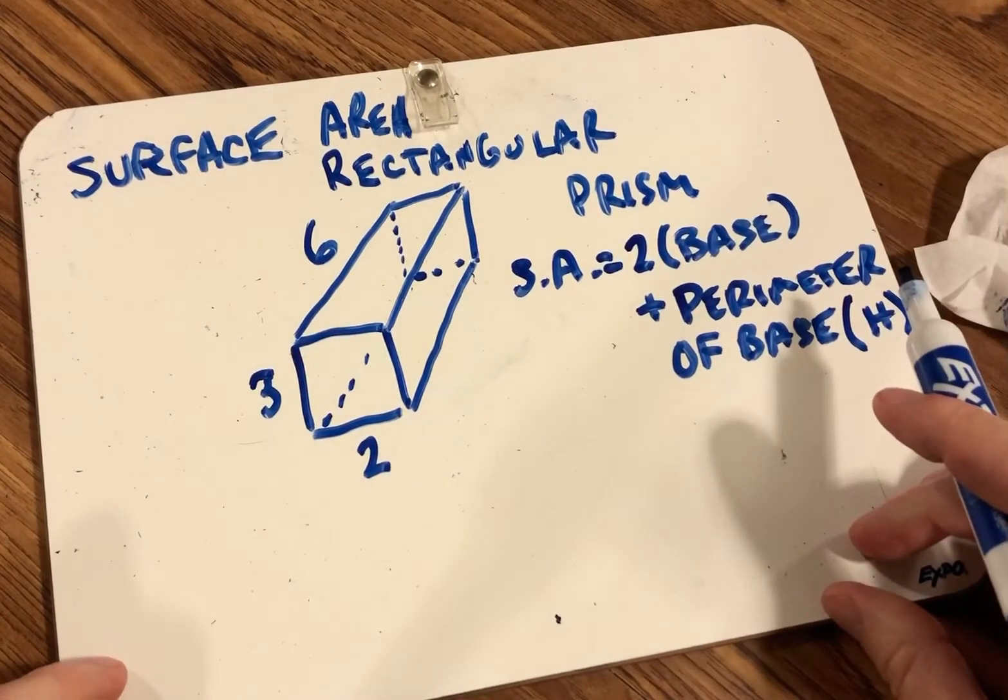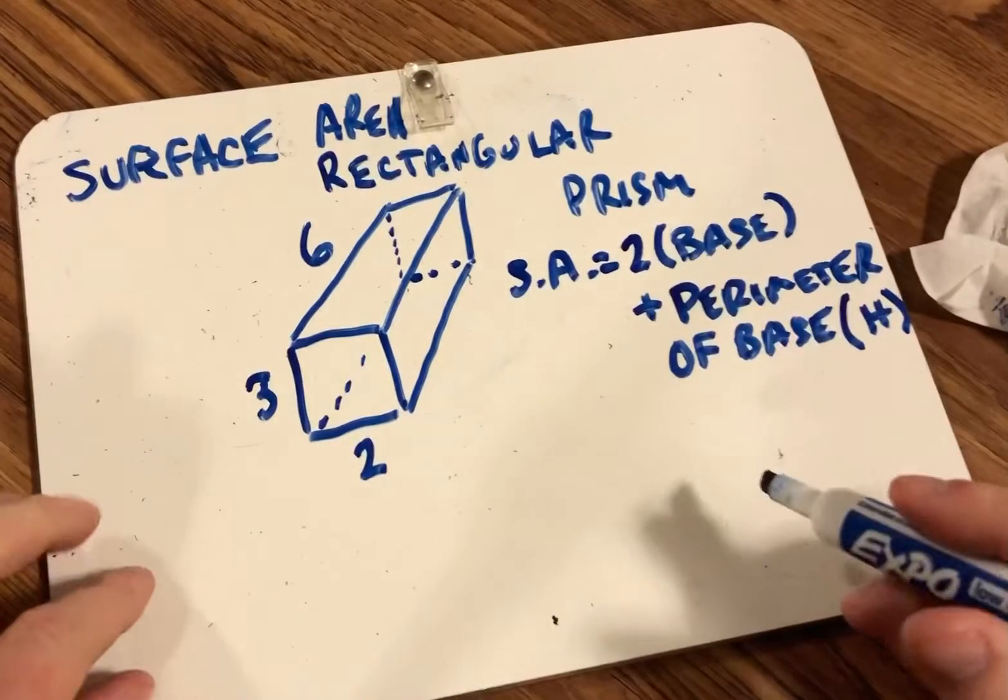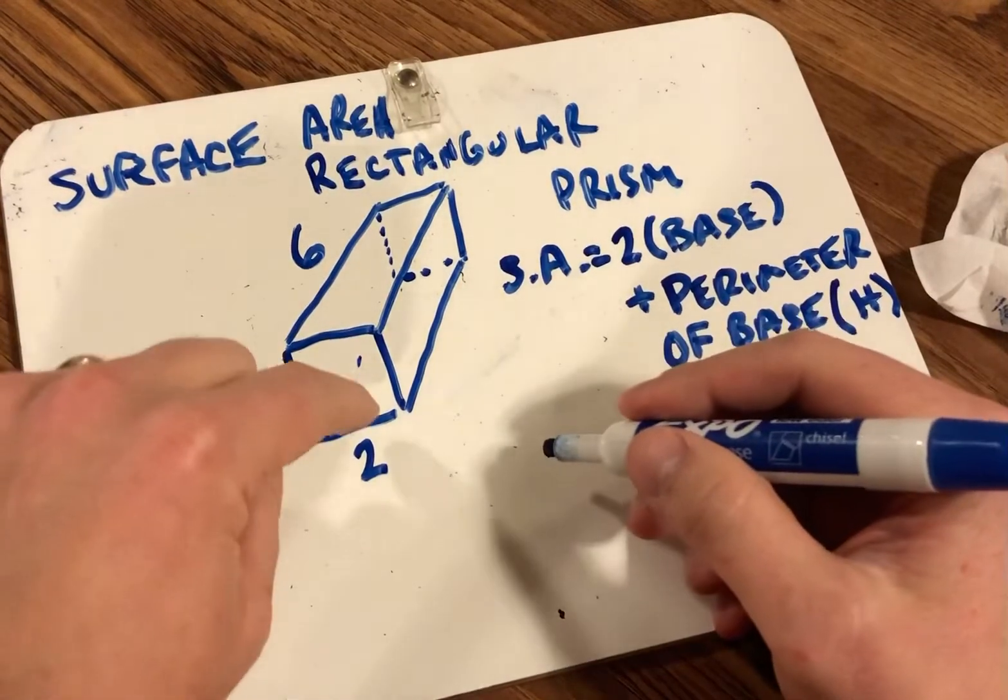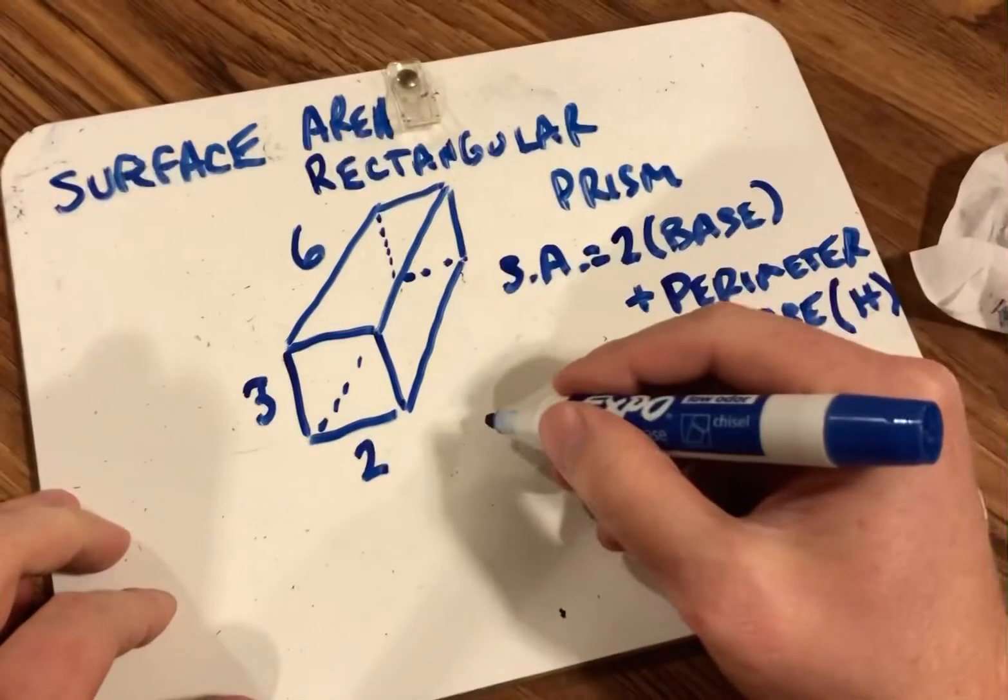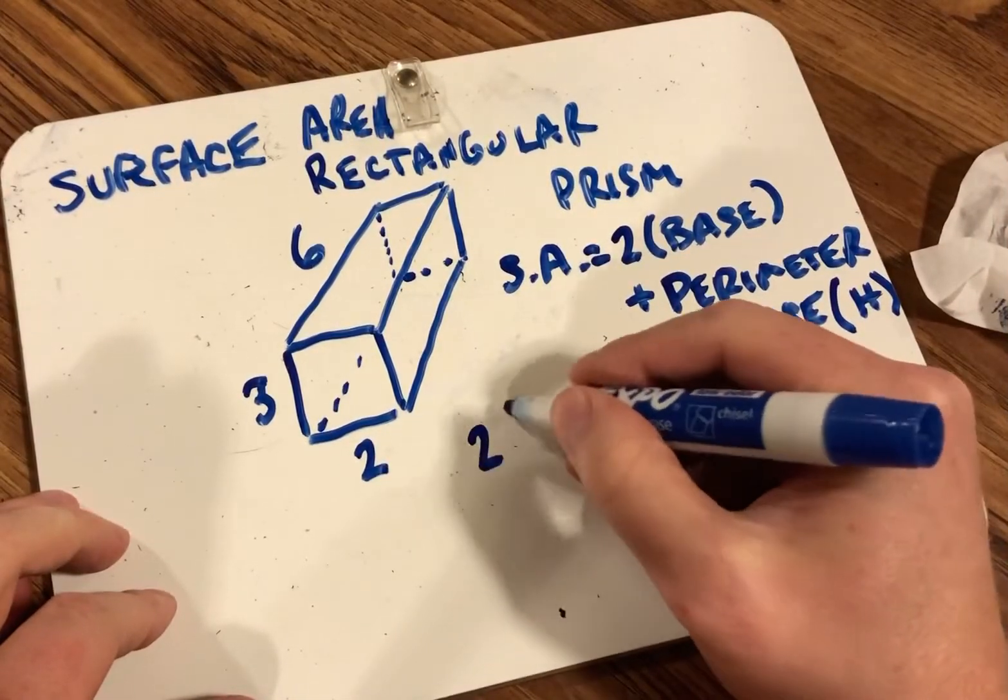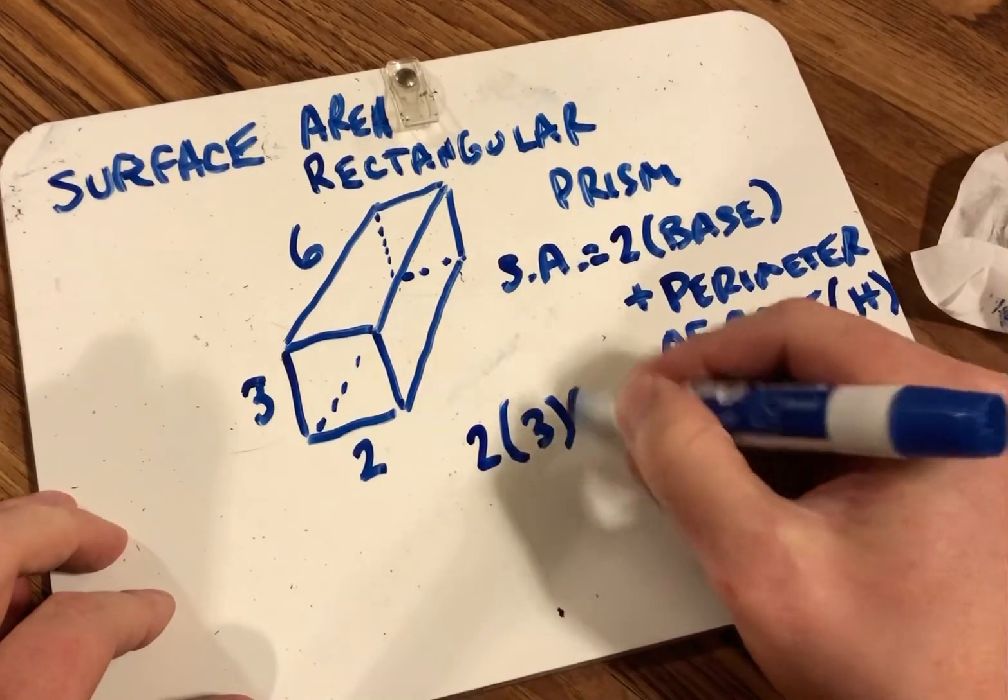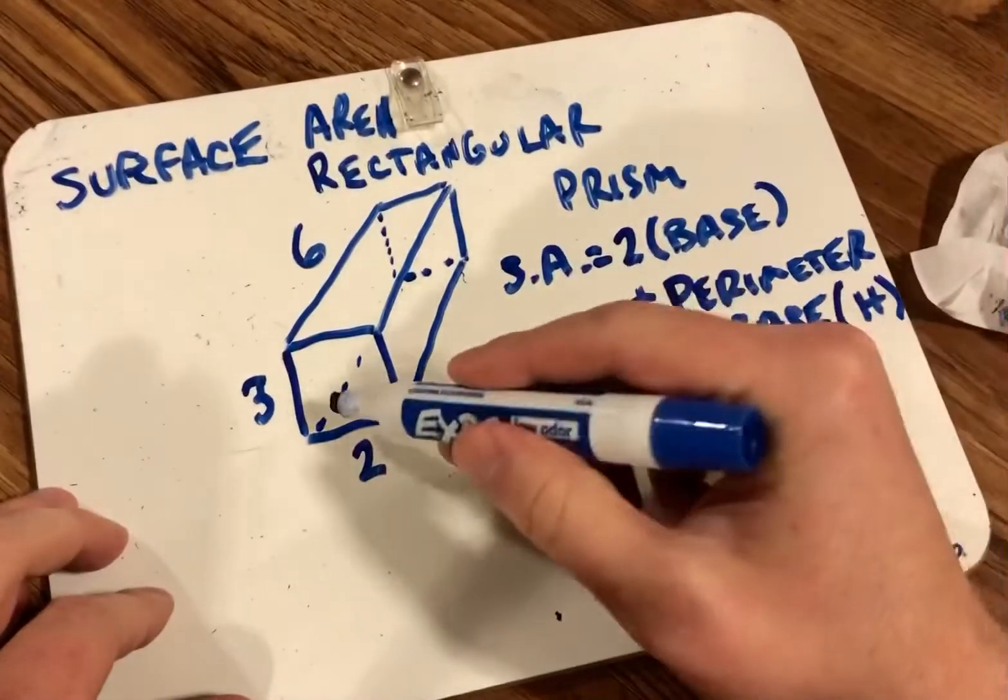So let's start with the base. If I find the area of the base, that's three times two, so my front base is three times two, and I'm going to multiply that by two, because I have two bases, the front and the back.